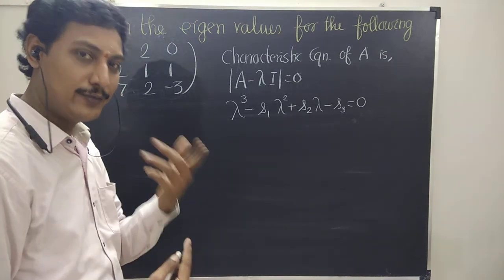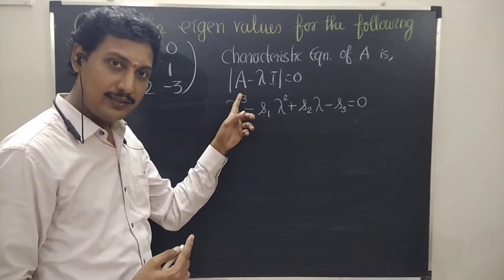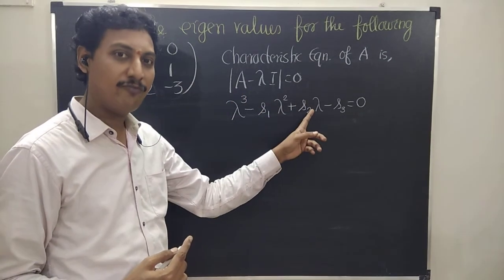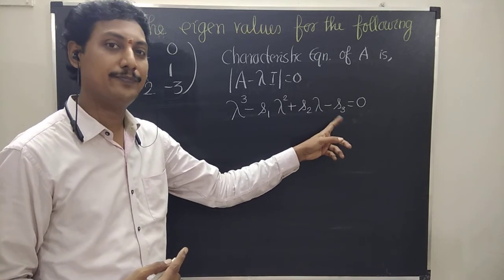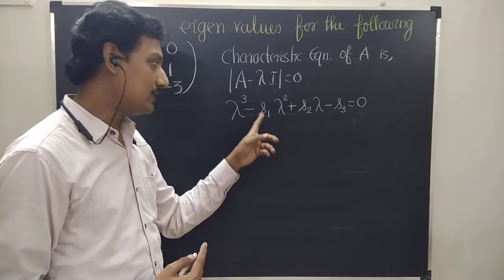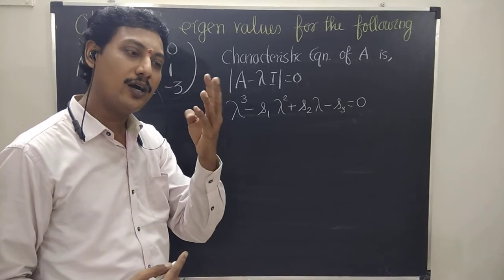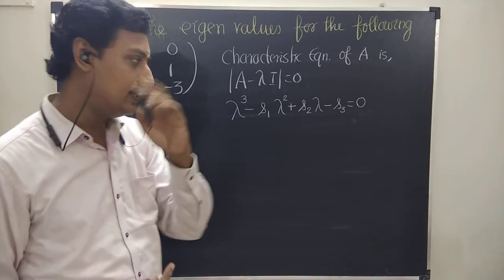This is a 3 by 3 matrix, so we get lambda power 3, then lambda power 2, lambda power 1, and finally the constant term (lambda power 0). The signs alternate: plus, minus, plus, minus. S1, S2, S3 — what are these values? You need to see that.